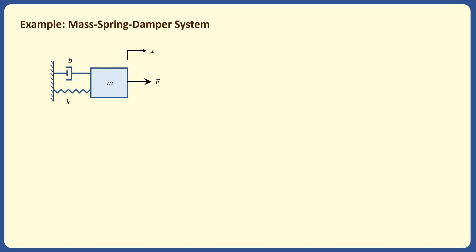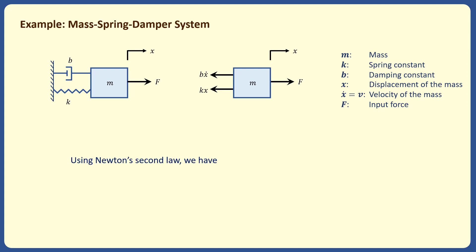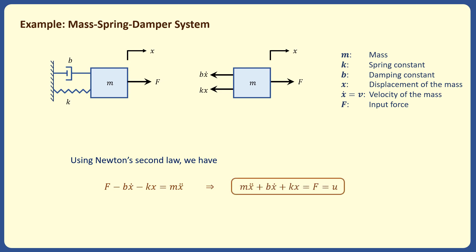Consider a mass-spring-damper system with mass m, spring constant k, and damping constant d. This is a free-body diagram that shows the forces applied to the mass in the x direction, where x is the displacement of the mass with x equals zero corresponding to the position of the mass when the spring is unstretched. X dot equals v is the velocity of the mass and f is the input force. We use Newton's second law to find the dynamical model of the system — the sum of all forces is equal to the mass times the acceleration of the mass. So the dynamical model of the system can be written as a second order differential equation in this form, where f equals u is the input to the system.